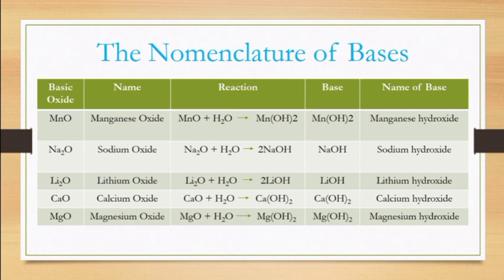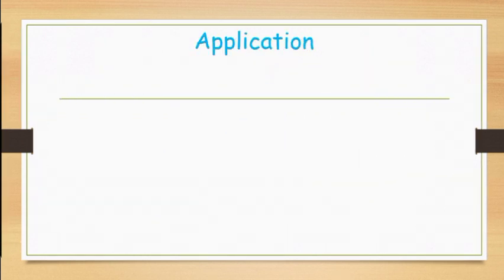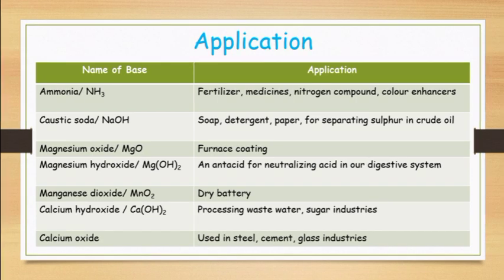The last part of this material is the application of bases. Ammonia is used as a raw material in producing fertilizer, medicines, nitrogen compounds, and color enhancers. Caustic soda — its applications include neutralizing acids and serving as a raw material for producing soap, detergent, paper, and rayon fiber.